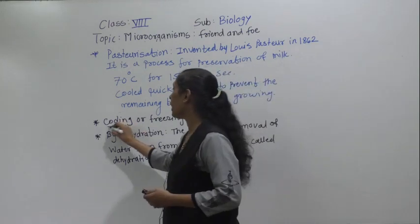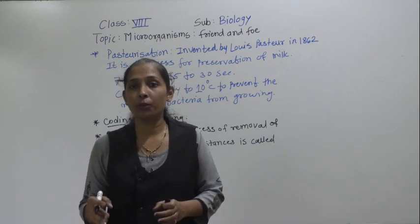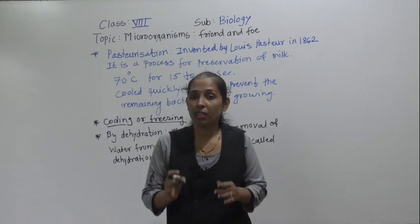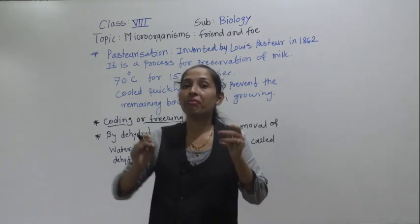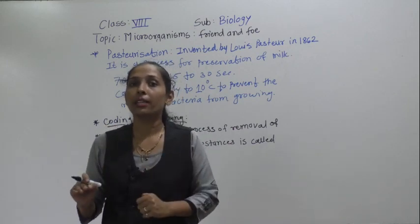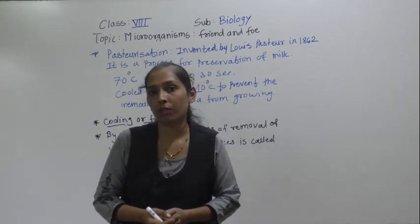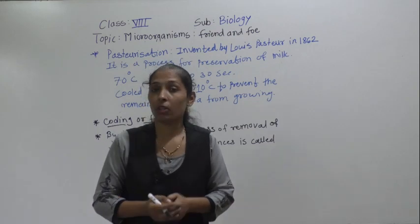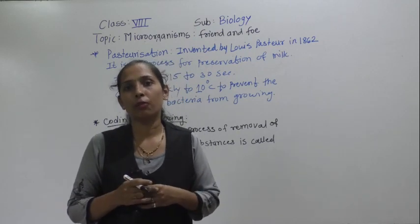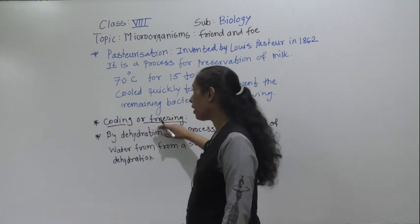The next method is cooling and freezing. Certain food materials - cooked food, milk and milk products - are kept in the refrigerator or deep freezer. In the refrigerator or deep freezer, the temperature is very low, which is not a favorable condition for the growth of microorganisms. Because of the low temperature, growth of microorganisms gets stopped and food is protected from contamination.